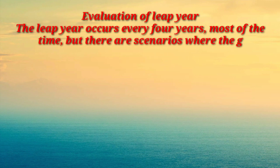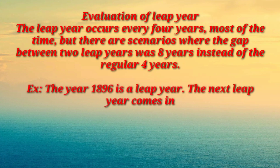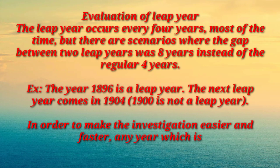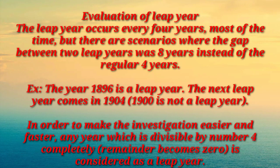Moving to the next slide — evaluation of leap year. Hum leap year ka evaluation kaise karte hain? The leap year occurs every 4 years. But there are scenarios where the gap between 2 consecutive leap years is 8 years instead of 4. For example, 1896 was a leap year and the next leap year came in 1904 — because 1900 is not a leap year.